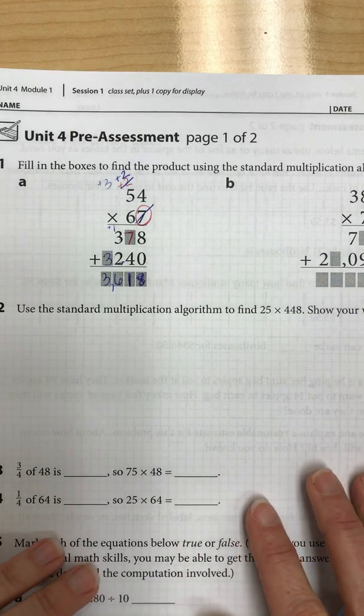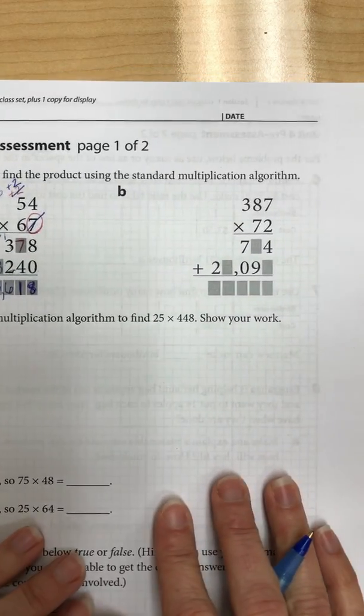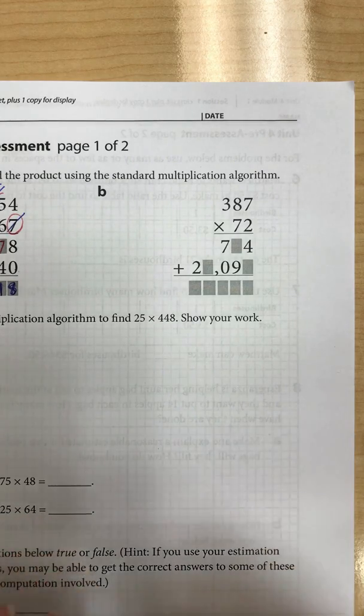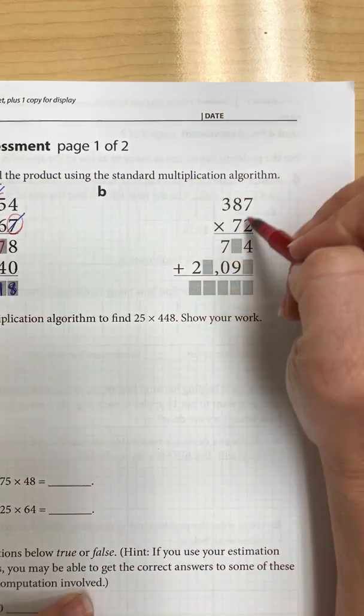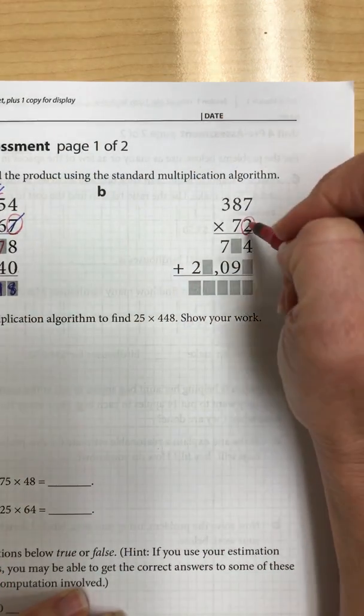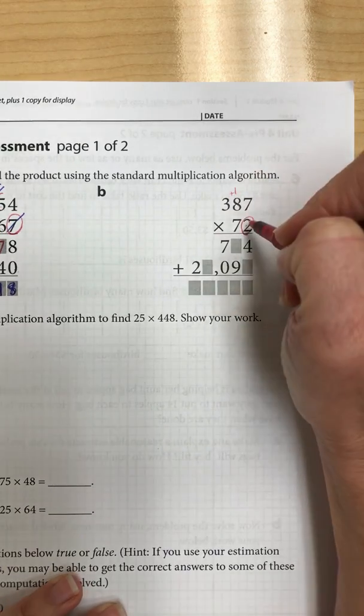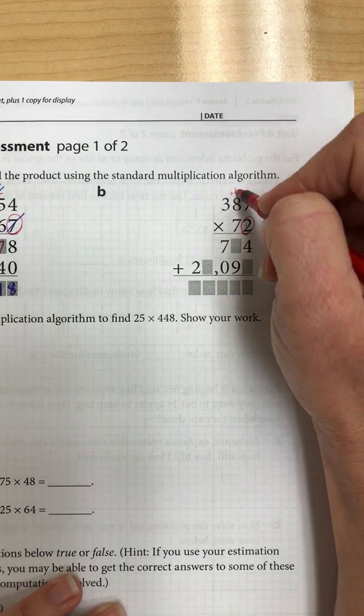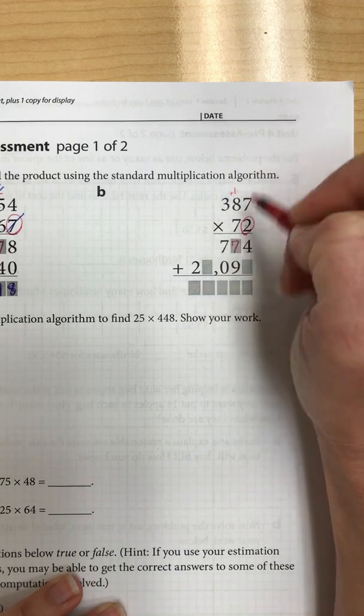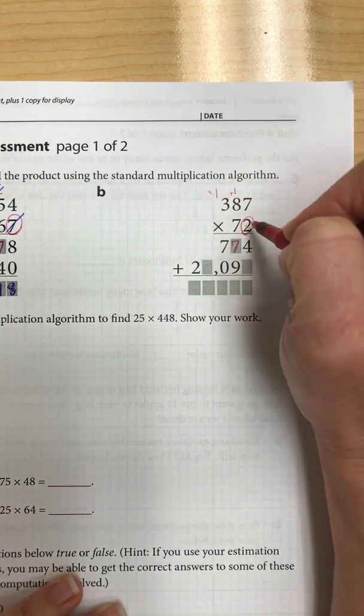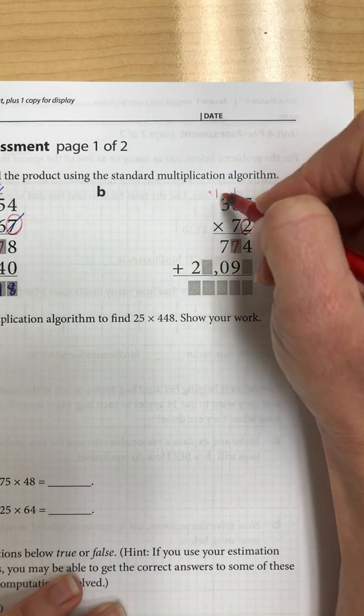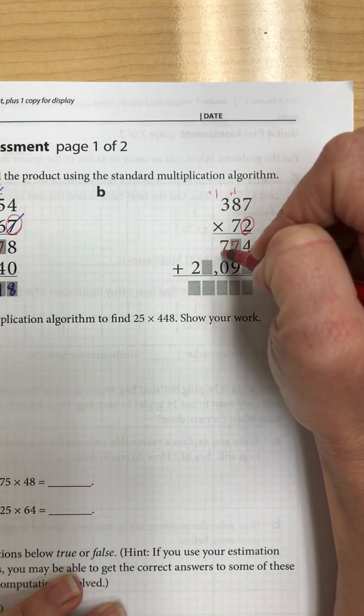On the next one, I have 387 times 72. Again, I'm going to start with the 2. So 2 times 7 is 14, I have a 4, carry my 1. 2 times 8 is 16 plus 1 is 17. So I'm going to drop my 7 and carry another 1. 2 times 3 is 6 plus 1 is 7 where I get the 7 there.